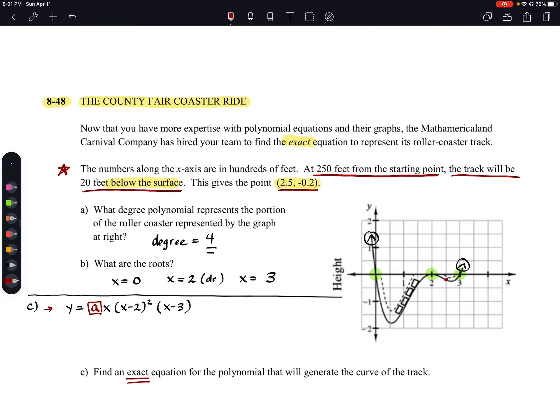Since we know that's a point, let's use that point to help us figure out what the stretch factor is. So we're going to use that point (2.5, -0.2). That's my x, that's my y. So negative 0.2 is equal to a times 2.5 times (2.5 - 2) squared times (2.5 - 3). Now we just need to take it and we need to simplify it down and solve it.